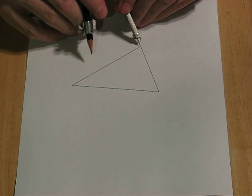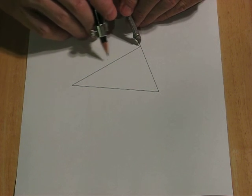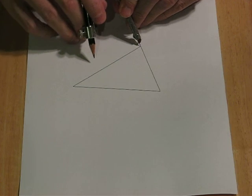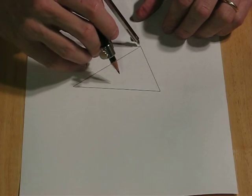To do this, you put the compass at one corner, and then you stretch the compass out beyond halfway and make an arc.